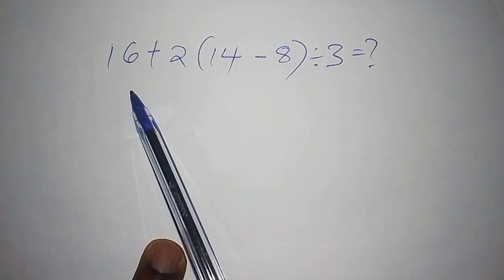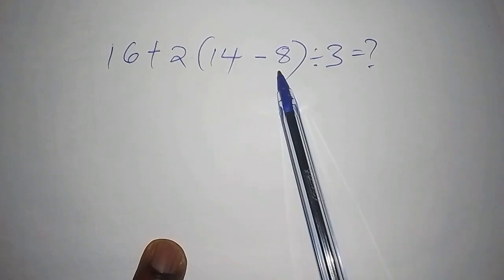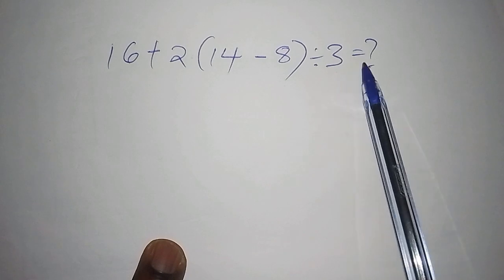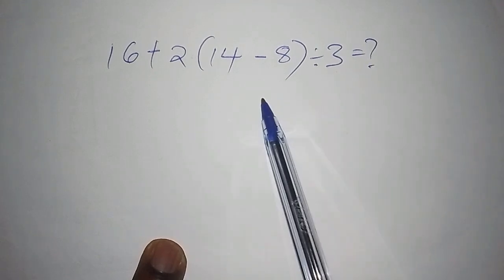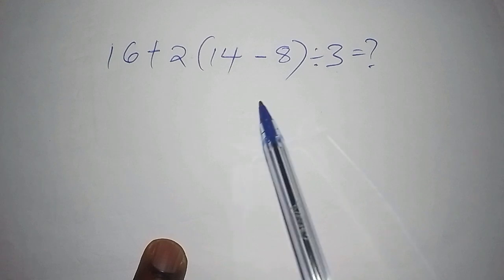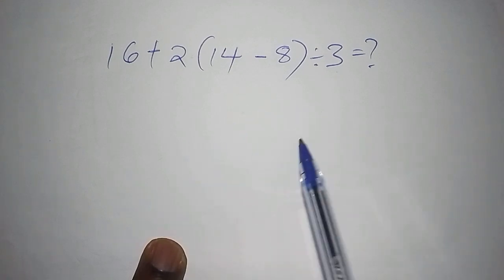We have 16 plus 2 into bracket 14 minus 8 close the bracket divide by 3. So what is the answer? I want you to pause this video so that you can also solve it on your own so that by the end of this broadcast you can compare the answers that you've got and see if you've got it the right way.